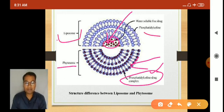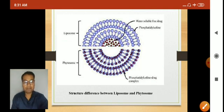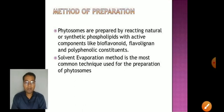Method of preparation: how can phytosomes be prepared? Phytosomes are prepared by reacting natural or synthetic phospholipids with active components like bioflavonoids, flavolignins, and polyphenolic constituents.